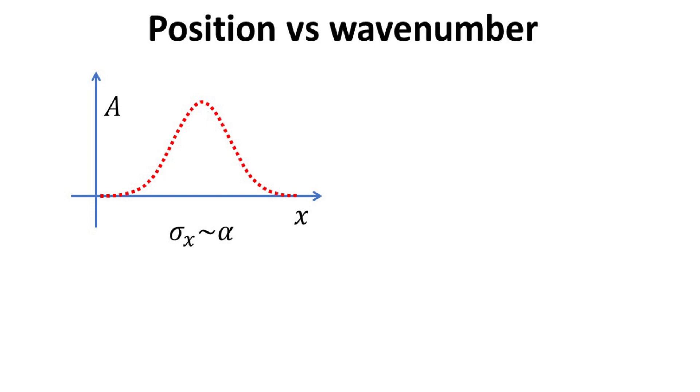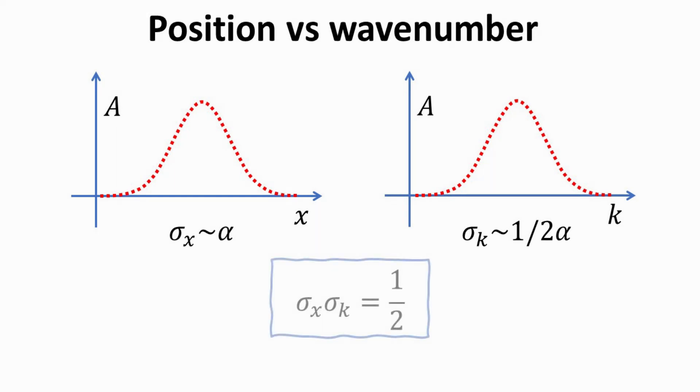This inverse relationship between the variance can be made most apparent using Gaussian signals. A Gaussian signal in the spatial domain with σx equals α has a Fourier transformed pair which is also a Gaussian function, but with σk of 1 divided by 2α. The product of the variance of the functions in their dual domains then yields exactly half.